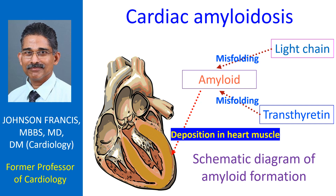Amyloidosis is a group of disorders in which an abnormal protein gets deposited in tissues. Two important types of amyloidosis which can involve the heart are light chain amyloidosis and transthyretin amyloidosis, known in short as AL and ATTR respectively. Earlier terms like primary amyloidosis, secondary amyloidosis, senile amyloidosis, and familial amyloid cardiomyopathy are now considered obsolete.